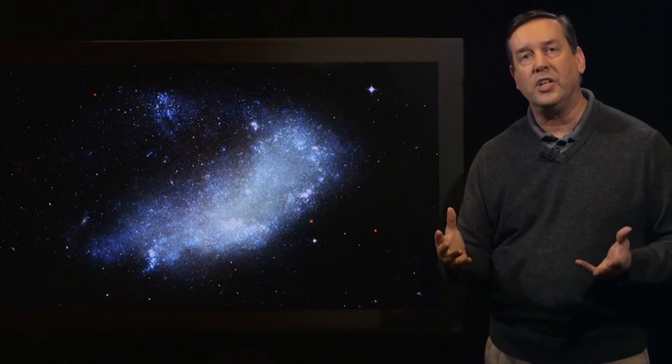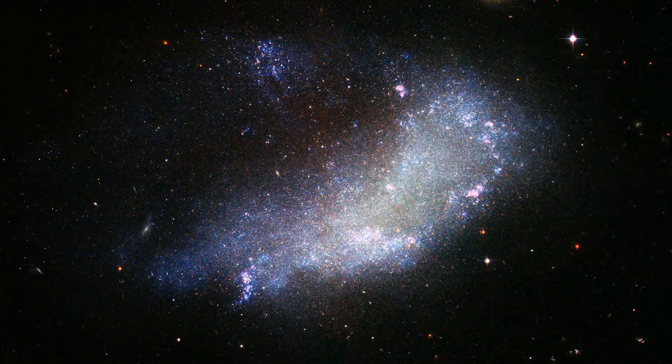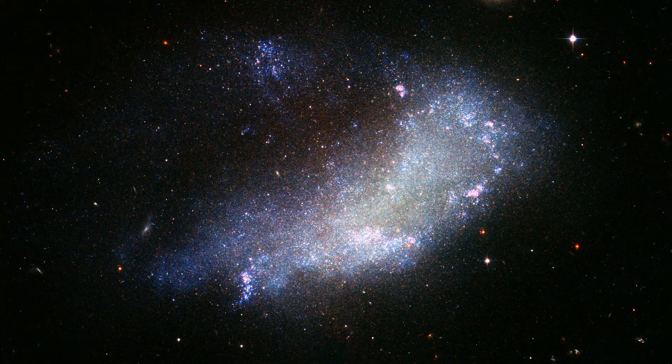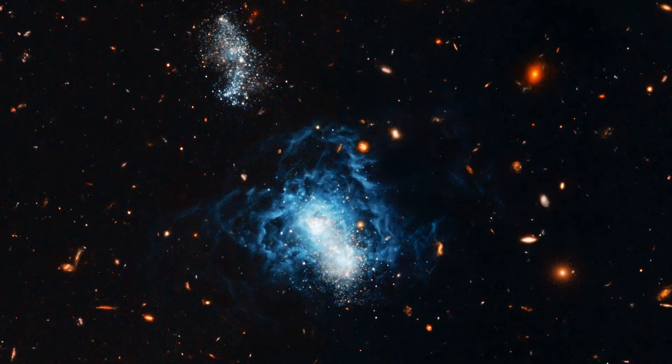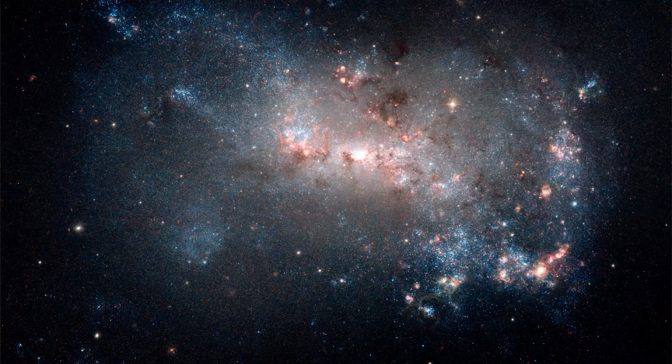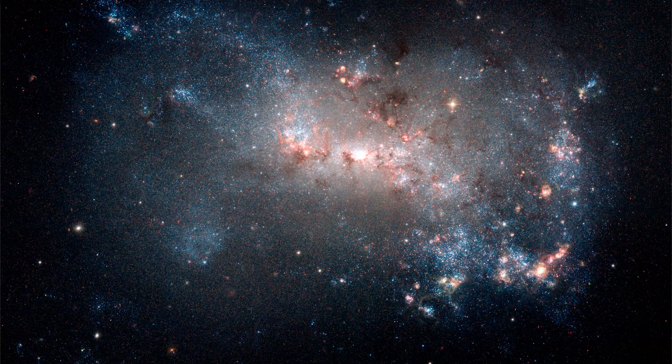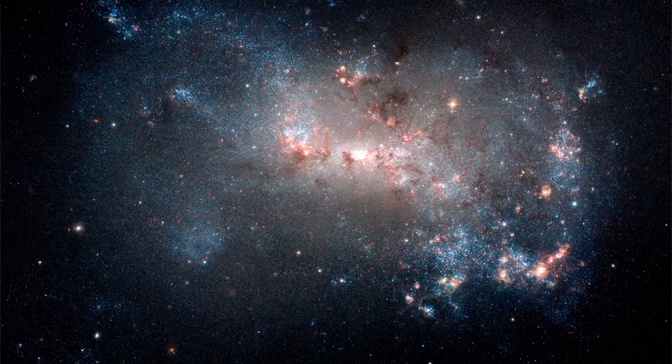Other dwarf galaxies have no specific shape. These are irregular galaxies. Irregular galaxies exhibit a wide variation in their shapes and their composition. Many dwarf irregulars have lots of gas, dust, and bright regions where stars are forming.